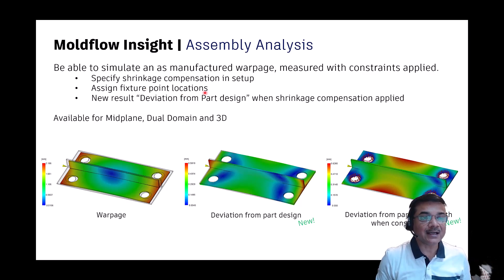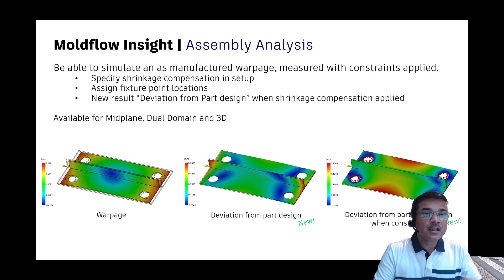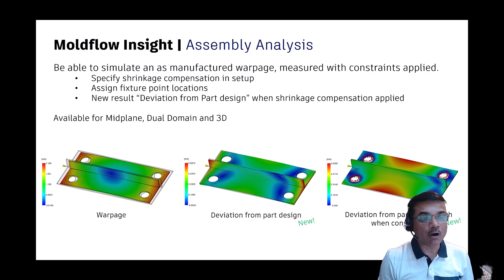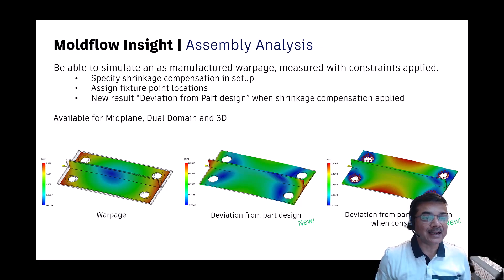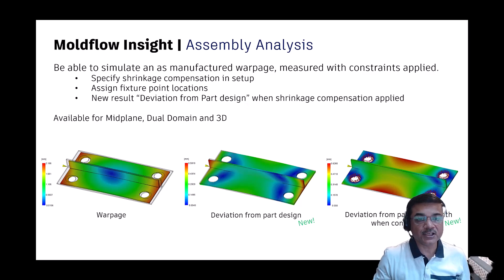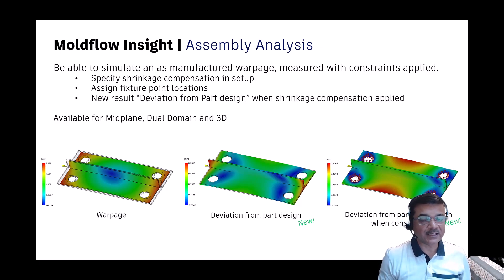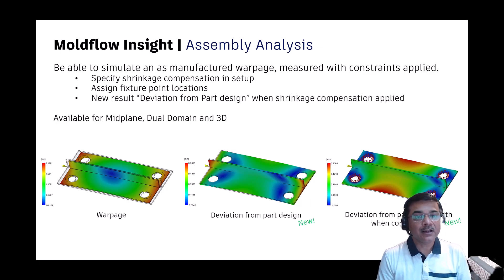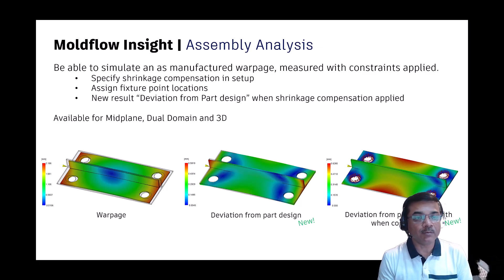The next thing is to assign the fixation points — these are nothing but the mounting locations, specifying how the part is going to be mounted and which locations you want to mount it at. We also introduced a new result: when the analysis is completed you will get a result called 'deviation from the part design.' When the shrinkage compensation is applied, you do not need to apply shrinkage compensation again — it will already be included in the deviation from the part design.